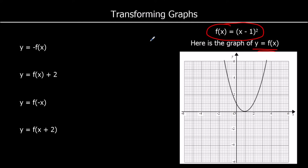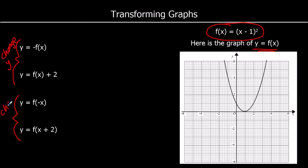We're going to look at four different transformations. We've got two transformations that change the output of the function — they change the y coordinate. When the change is outside the bracket, it's happening to the whole function and changes the y coordinate. When the change is inside the bracket, it's affecting the input to the function, and that is the x coordinate.